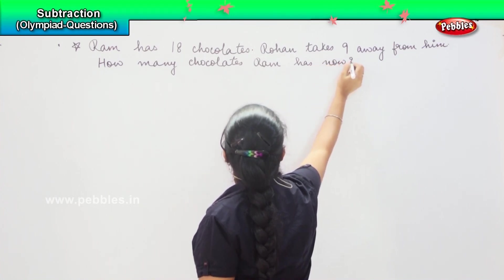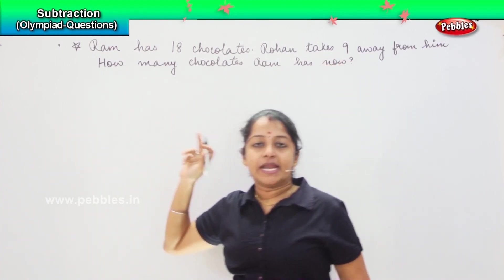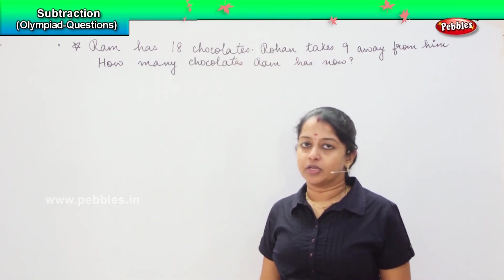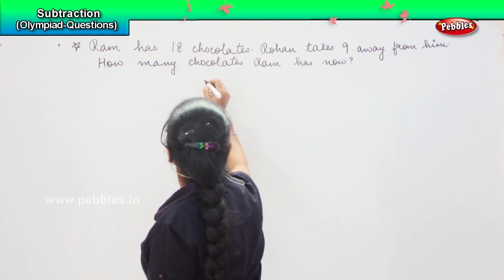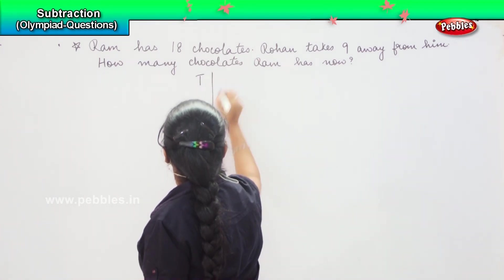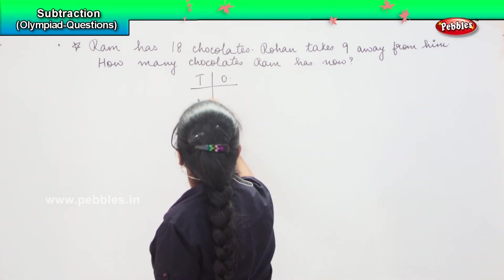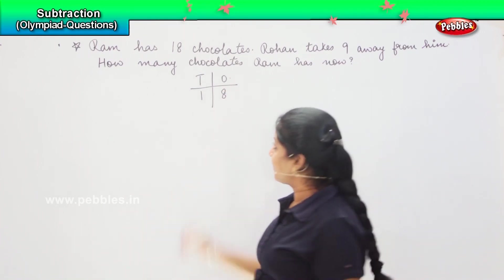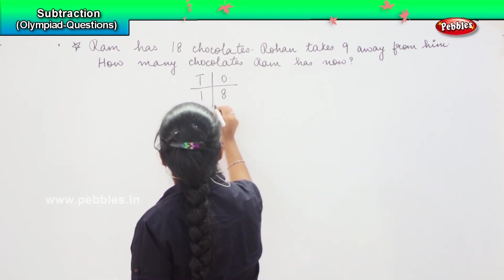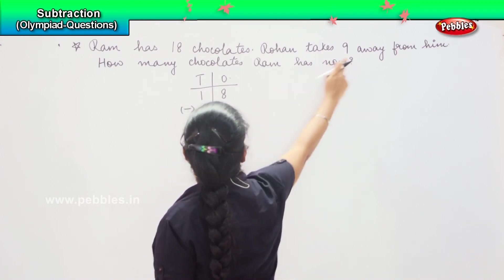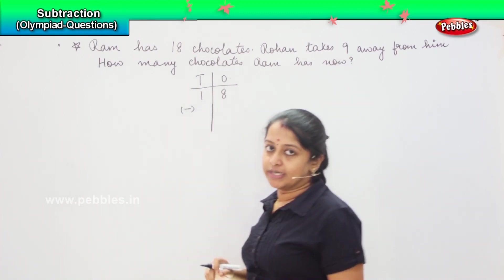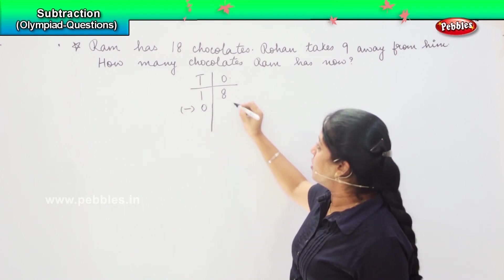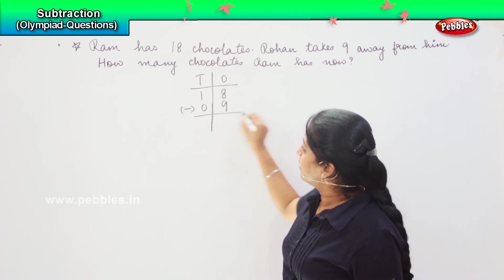So, did you understand the question, children? Ram was having 18 chocolates, Rohan took 9 away from him. So, what we have to do here? We use 10s and 1s. 18 can be written as 1 ten and 8 ones, minus how many did Rohan take? Rohan has taken away 9 chocolates. So, there are no ones, so you will write here 0 and 9.